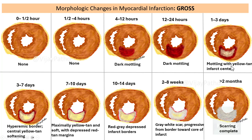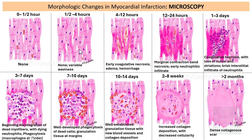To summarize: no features in the first four hours, then dark mottling and yellow tan center at one to three days, hyperemic border at three to seven days due to granulation tissue formation. The scar starts appearing at the periphery and gradually moves toward the center, and is complete at around two months. Microscopically: early waviness, coagulative necrosis at four to twelve hours, well-formed coagulative necrosis with contraction band necrosis and early neutrophilic infiltrate at 12 to 24 hours, more neutrophils at one to three days, macrophages at three to seven days, granulation tissue and collagen deposition at seven to fourteen days, and finally dense collagenous scar.